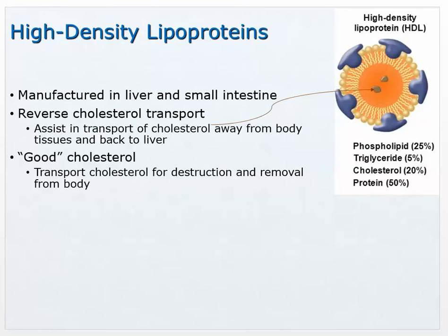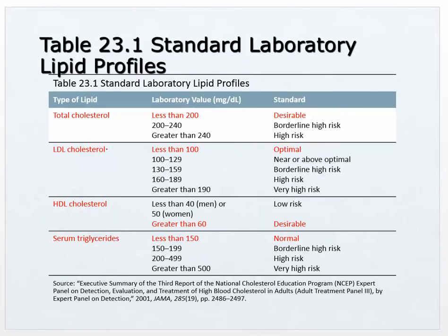HDLs are manufactured in the liver and small intestine and perform reverse cholesterol transport — when there's too much cholesterol in a cell, HDLs pick it up and bring it back to the liver for processing or removal. They're considered good cholesterol because they act as a cleaner. High levels of HDLs are desirable.